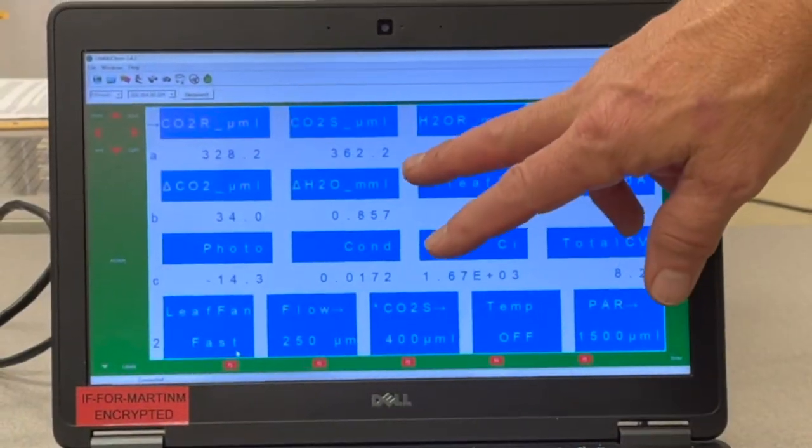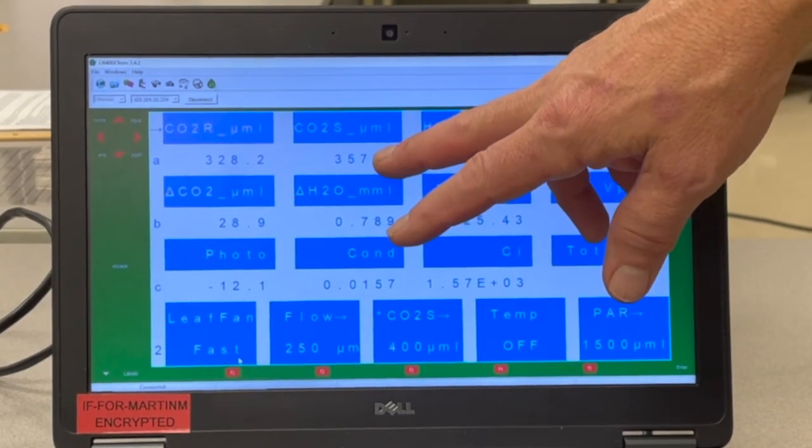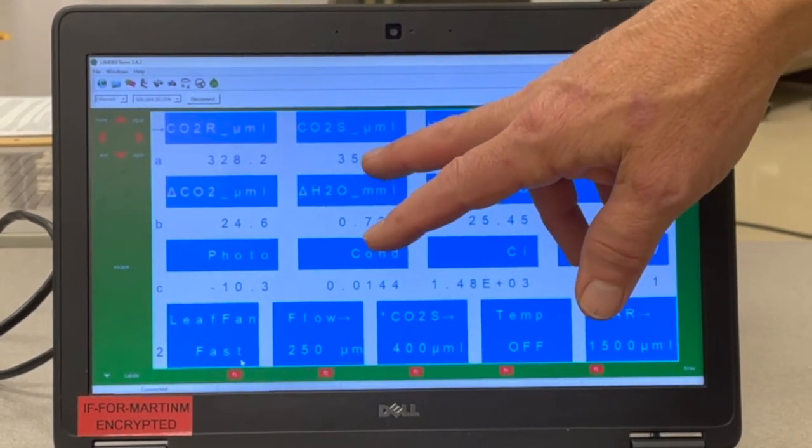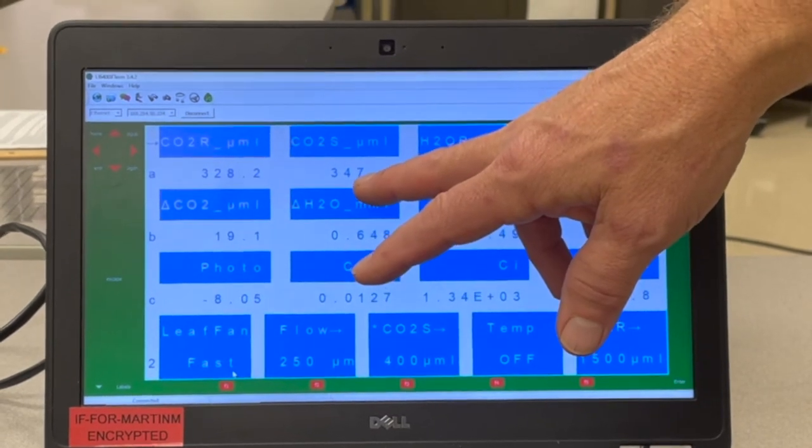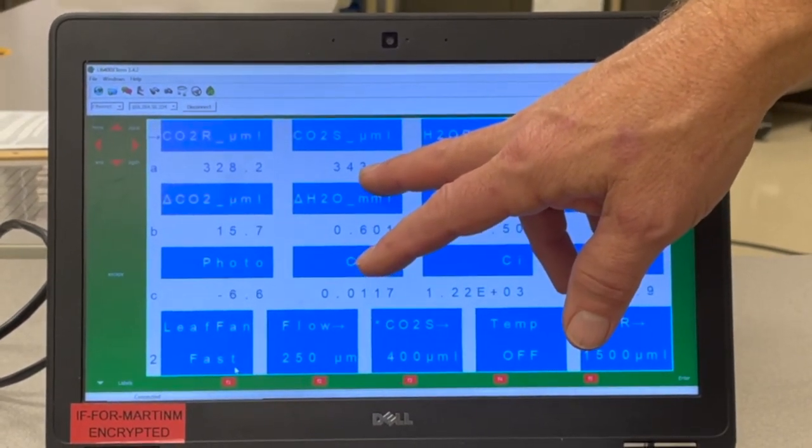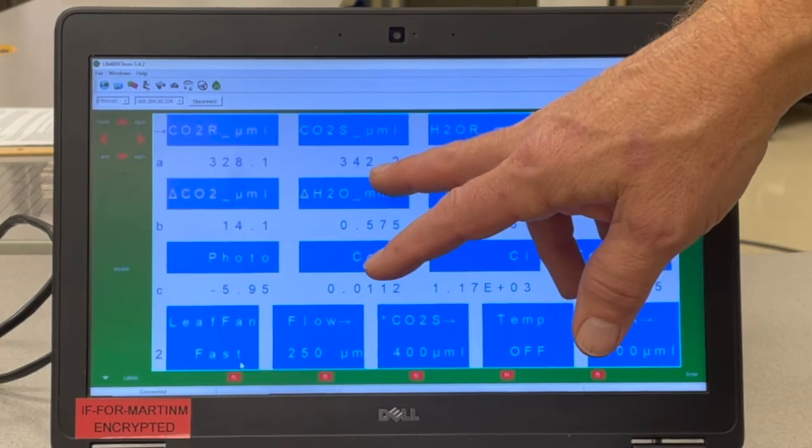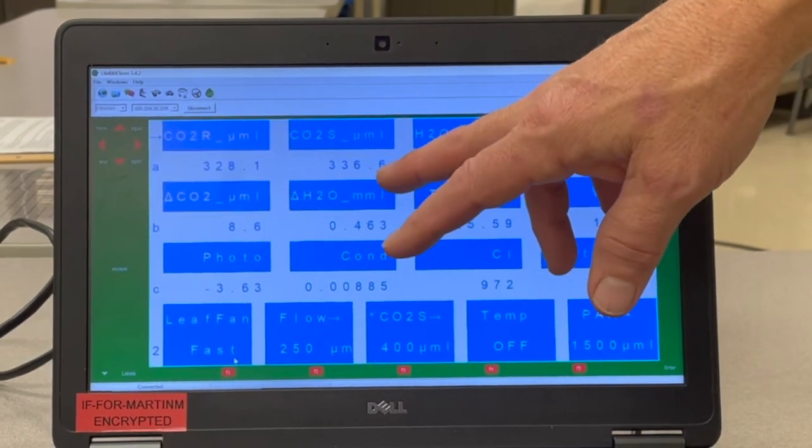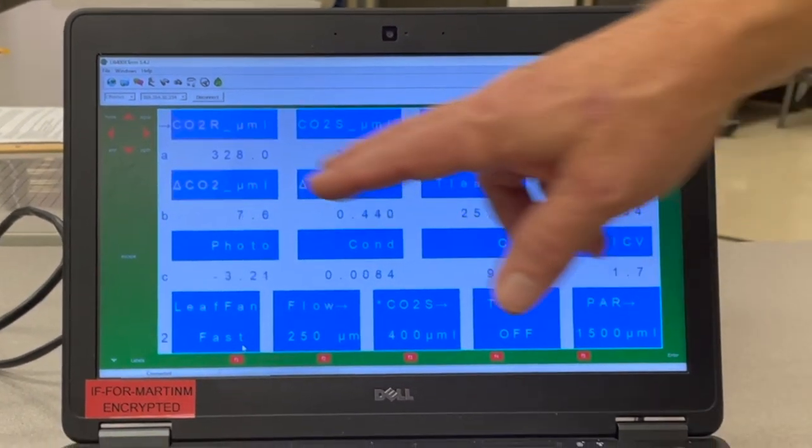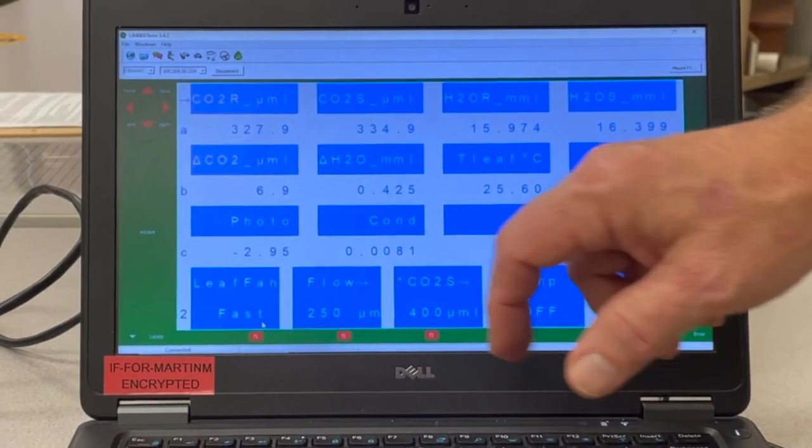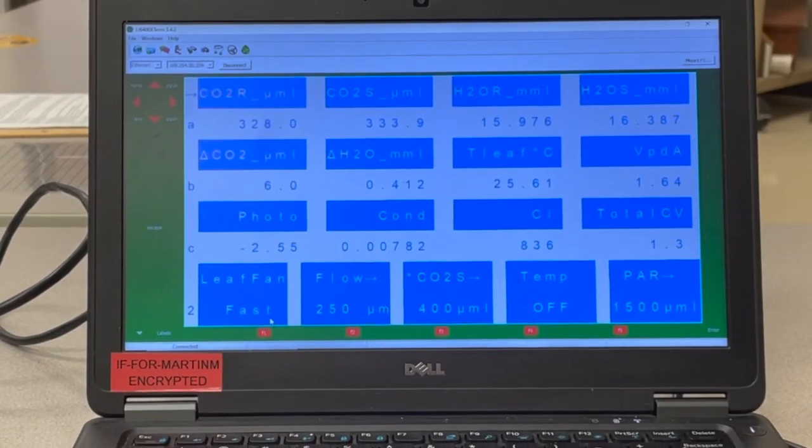What we'll be able to observe is that as the leaf photosynthesizes, it's going to pull that CO2 sample concentration down. Once it equilibrates, that CO2 sample number will be below CO2 reference, and we'll get a calculated net photosynthesis rate.